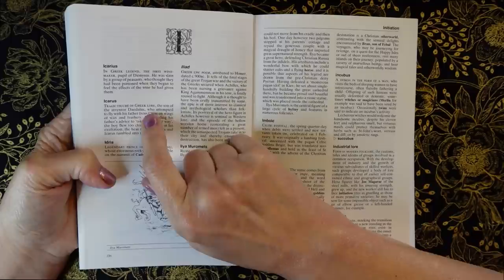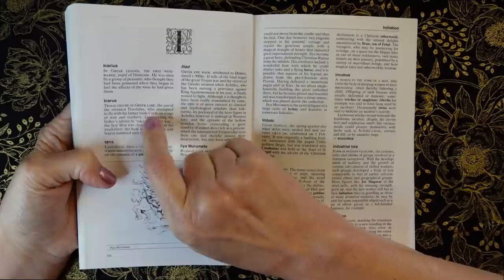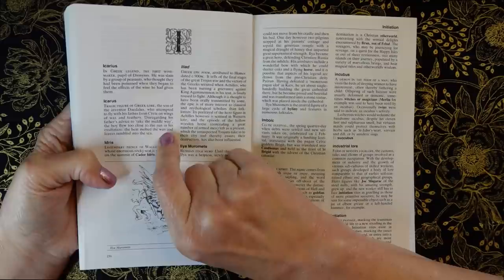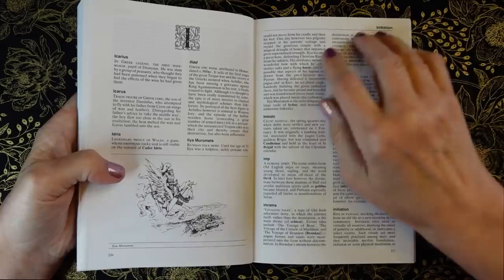Icarus, tragic figure of Cretan lore, the son of the inventor Daedalus, who attempted to fly with his father from Crete on wings of wax and feathers. Disregarding his father's advice to take the middle way, the boy flew too close to the sun in his exaltation. The heat melted the wax, and Icarus tumbled into the sea.